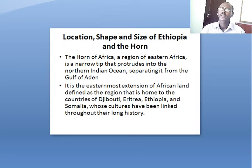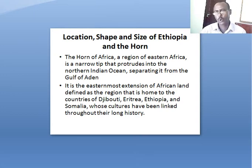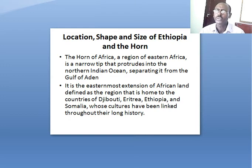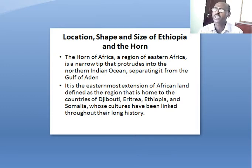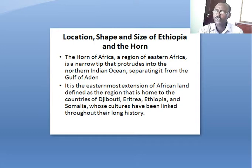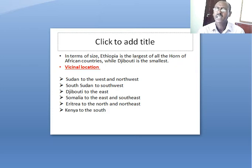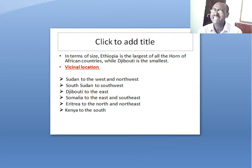When it comes to the location, shape, and size of Ethiopia and the Horn, the Horn of Africa is the region of eastern Africa. It is a narrow tip that protrudes into the northern Indian Ocean, separating it from the Gulf of Aden. It is the easternmost extension of the African land, defined as the region that is home to the countries of Djibouti, Eritrea, Ethiopia, and Somalia, whose cultures have been linked throughout their long history. Among these countries, Ethiopia is the largest and Djibouti is the smallest.